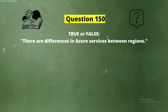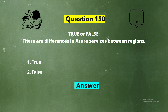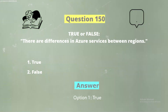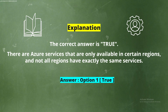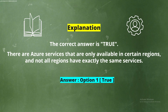Question 150. True or False: There are differences in Azure services between regions. The correct answer is True. There are Azure services that are only available in certain regions, and not all regions have exactly the same services.